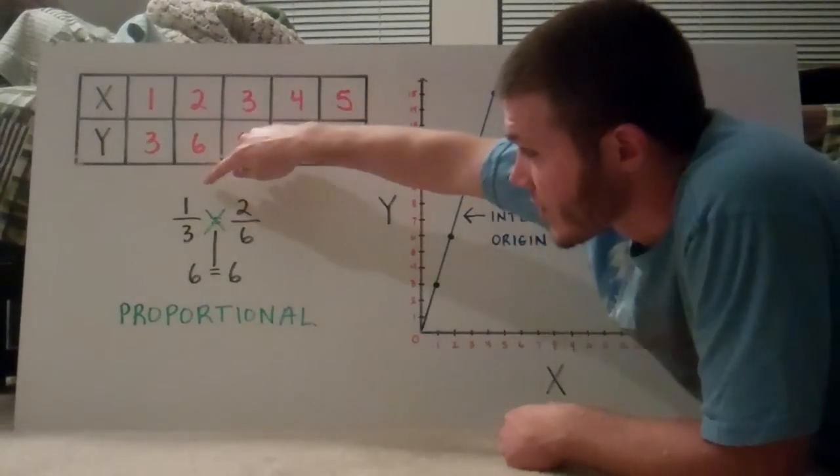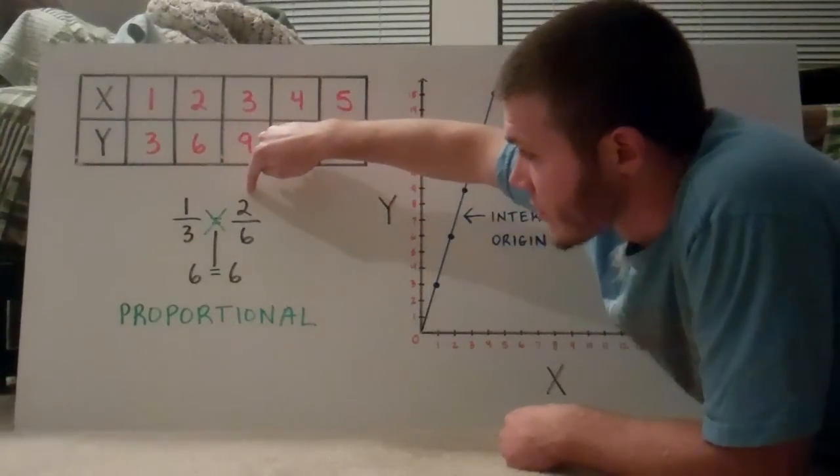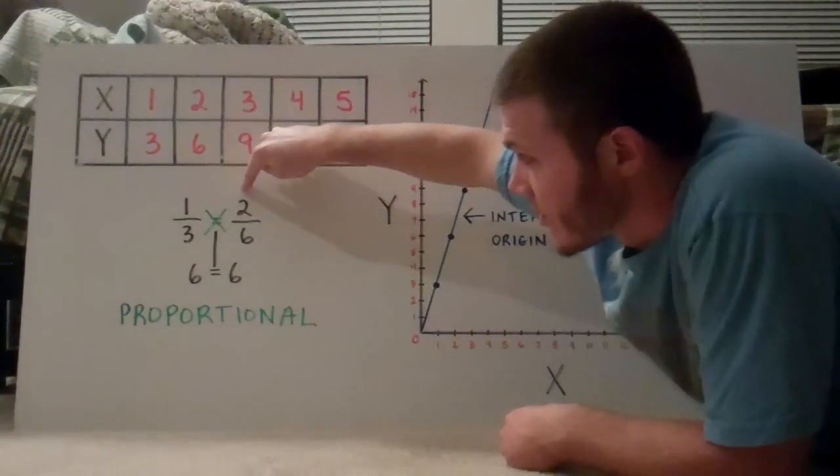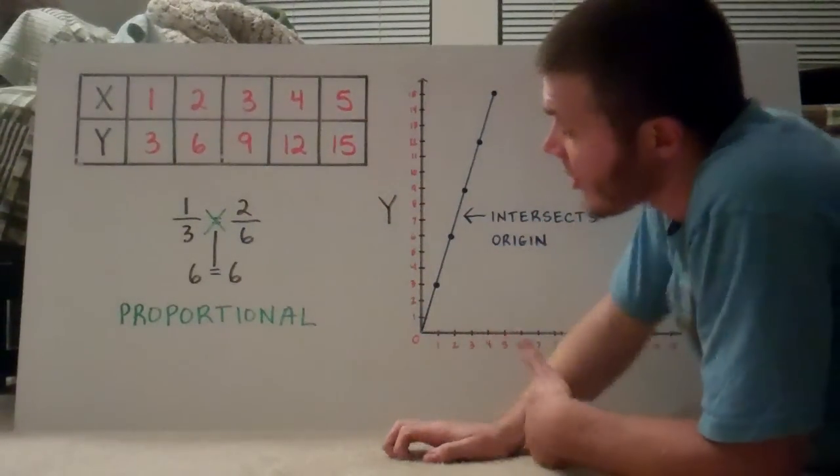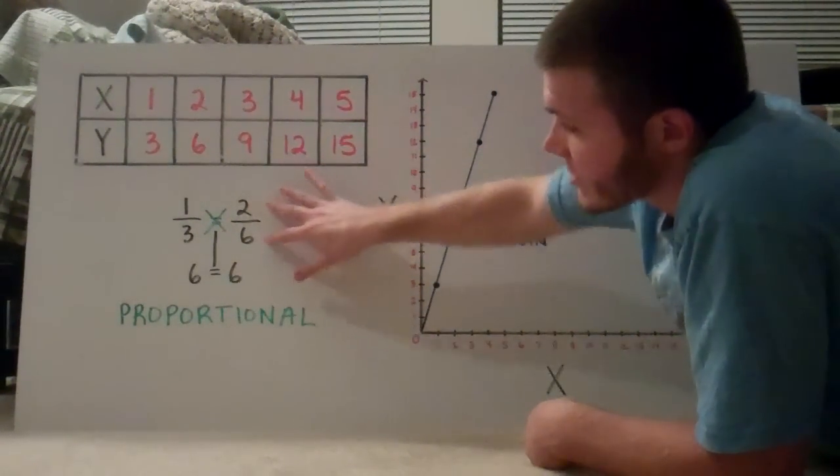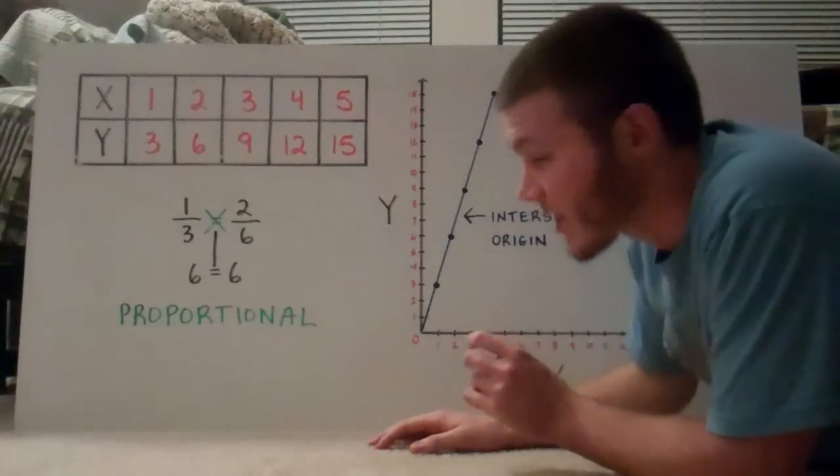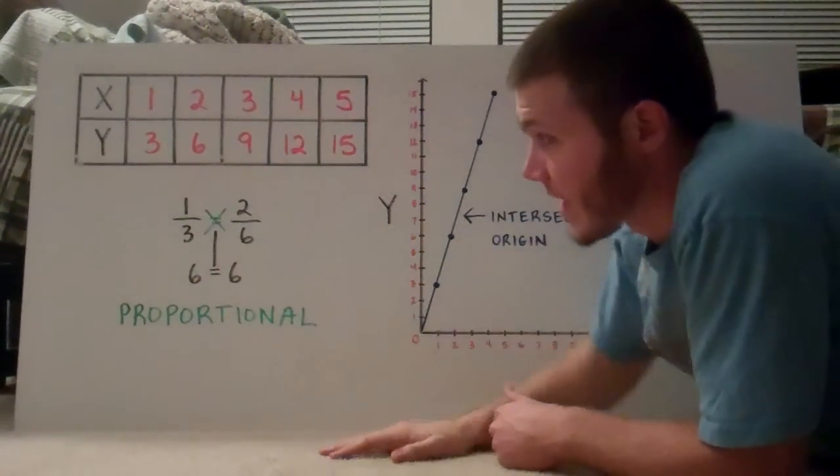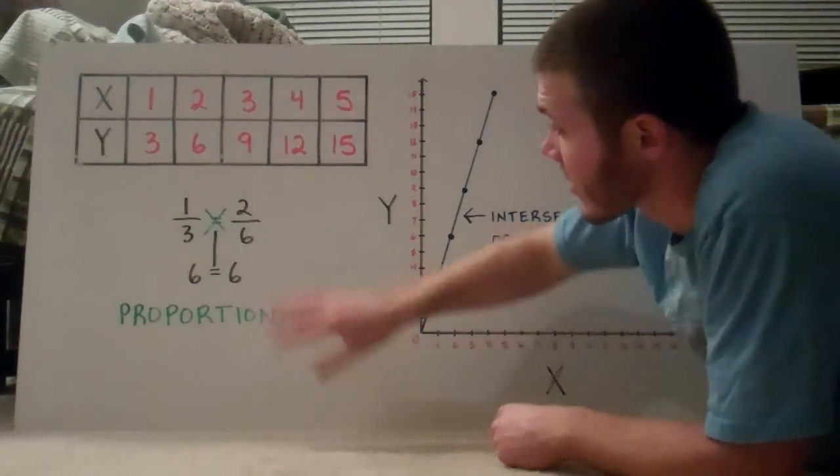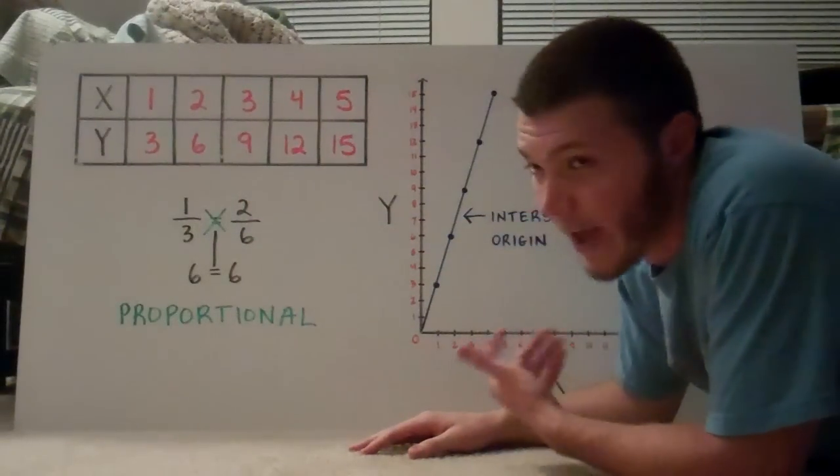Another way you could have solved this is you could have done, well, how can we go from 1 to 2? You can do times 2. Well, if you do times 2 on bottom, 3 times 2 is 6, yeah that works out. Or you could simplify 2 over 6 the most that you possibly can, which would turn into 1 over 3, which is that already. So yeah, these have to be equal to each other or they have to be proportional.